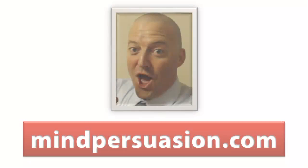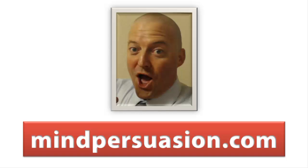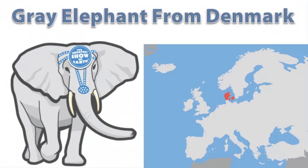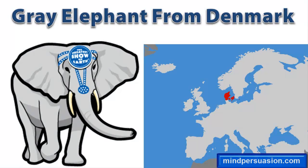Hello, this is George Hutton from MindPersuasion.com. Here's a quick party trick you can use to have some fun. It's called the Gray Elephant from Denmark trick, but you shouldn't call it this until you've finished the trick. You'll see why in a minute.